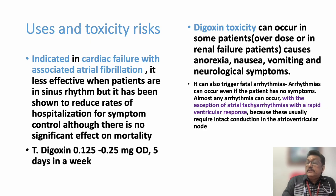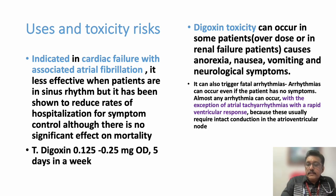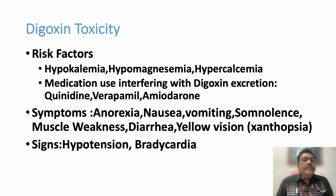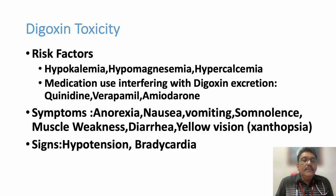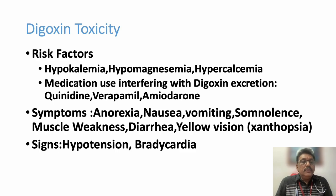Rapid ventricular rate with atrial tachyarrhythmia is not very common in Digoxin toxicity, but atrial arrhythmias with controlled or reduced ventricular rate are common. Risk factors for Digoxin toxicity include hypokalemia, hypomagnesemia, hypercalcemia, and other drugs used alongside Digoxin such as quinidine, verapamil, and amiodarone.